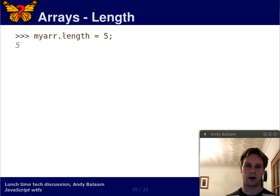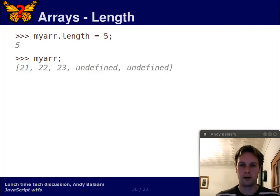So, the answer you get back is 5. Now, what's in myArror? Well, what do you think? Well, what's in myArror is 5 things. 21, 22, 23, undefined, and undefined.